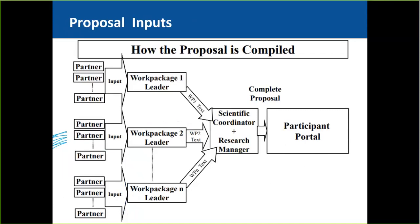The proposal is structured into different work packages. Each work package has a work package leader and is assigned to different partners — for example, Partner A may be involved in work packages one and three, while Partner B is involved only in work package two. There are typically between eight and nine work packages, each contributing to the final proposal submitted by the coordinator.